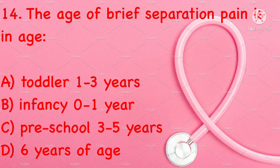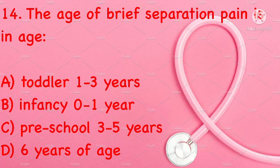The age of brief separation pain is in which age group? Toddler 1 to 3 years, infancy 0 to 1 year, preschool 3 to 5 years, or 6 years of age. Correct answer is A: toddler 1 to 3 years.